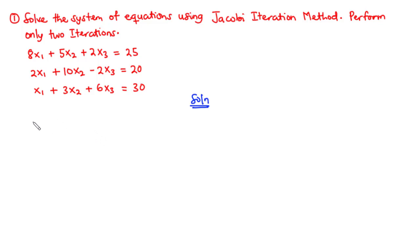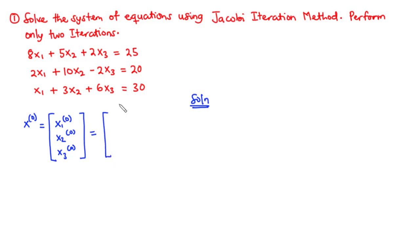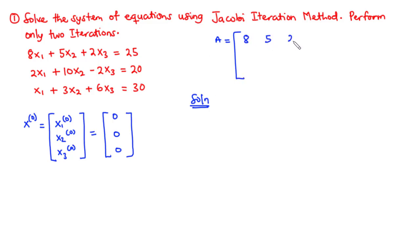That is the initial guess we make: x(0) = [x1(0), x2(0), x3(0)] = [0, 0, 0]. Next, we verify whether the coefficient matrix generated from this system is diagonally dominant. The coefficient matrix A has components: [8, 5, 2; 2, 10, -2; 1, 3, 6].